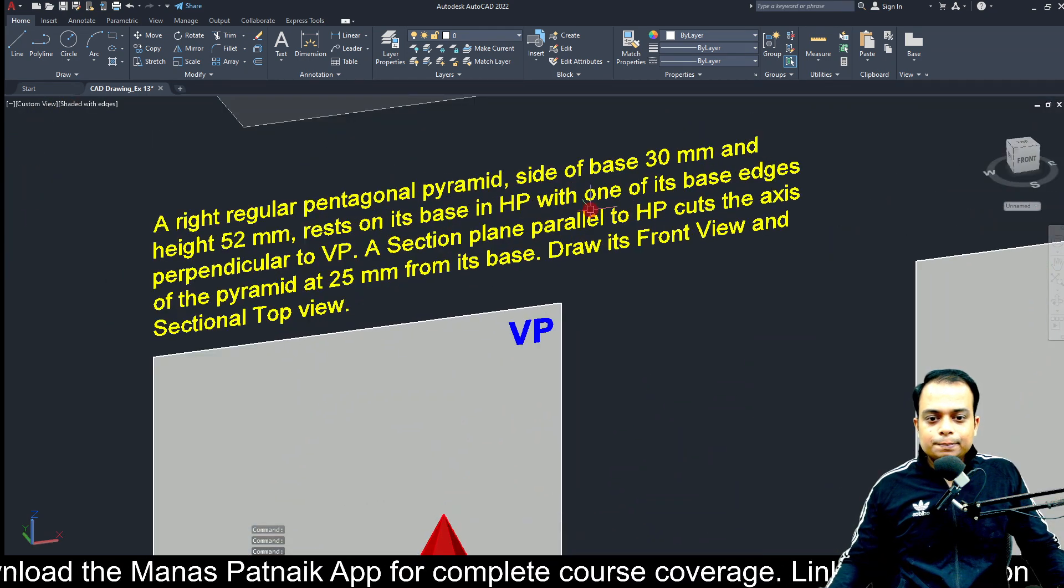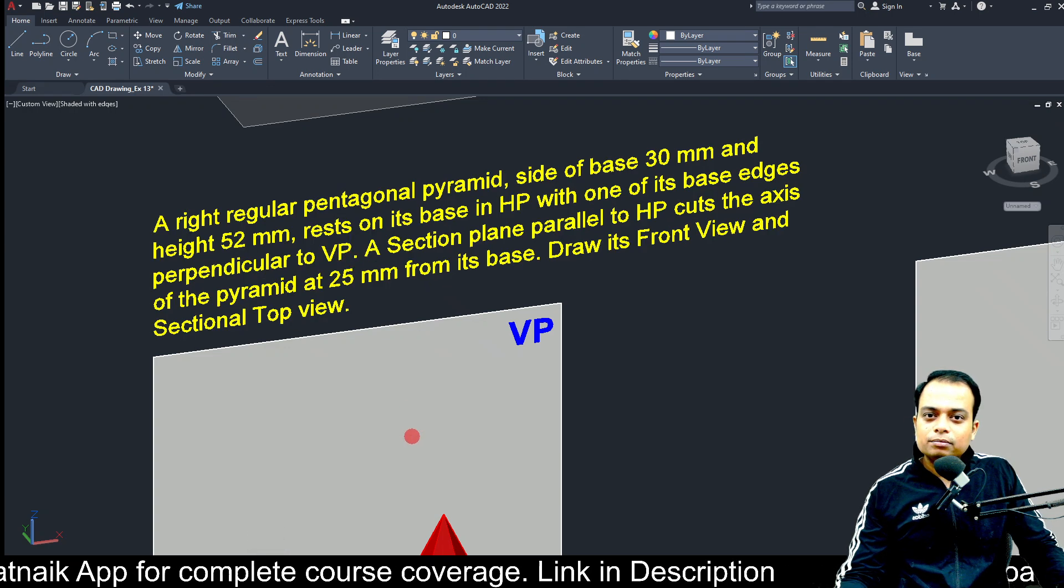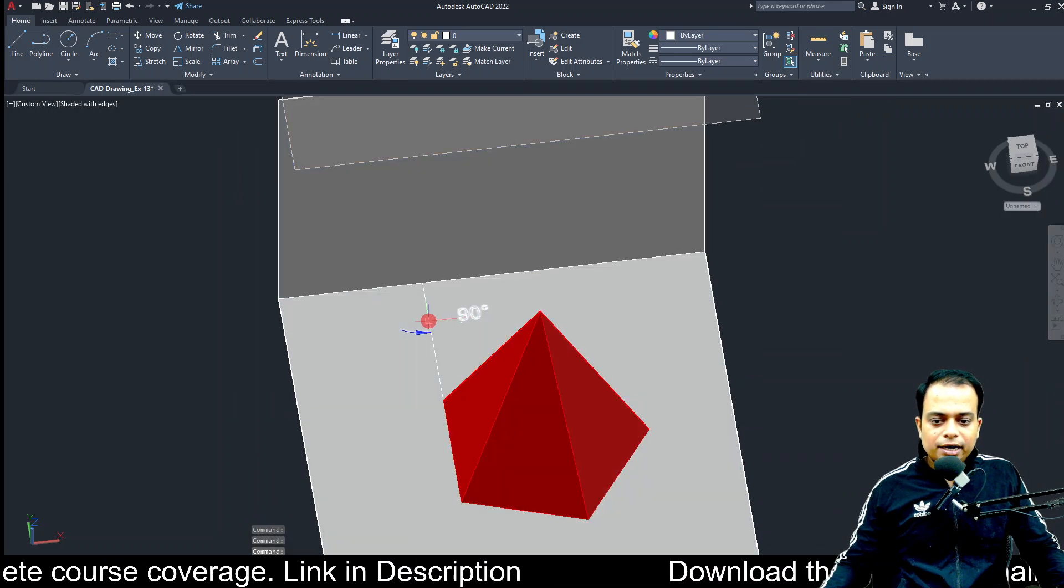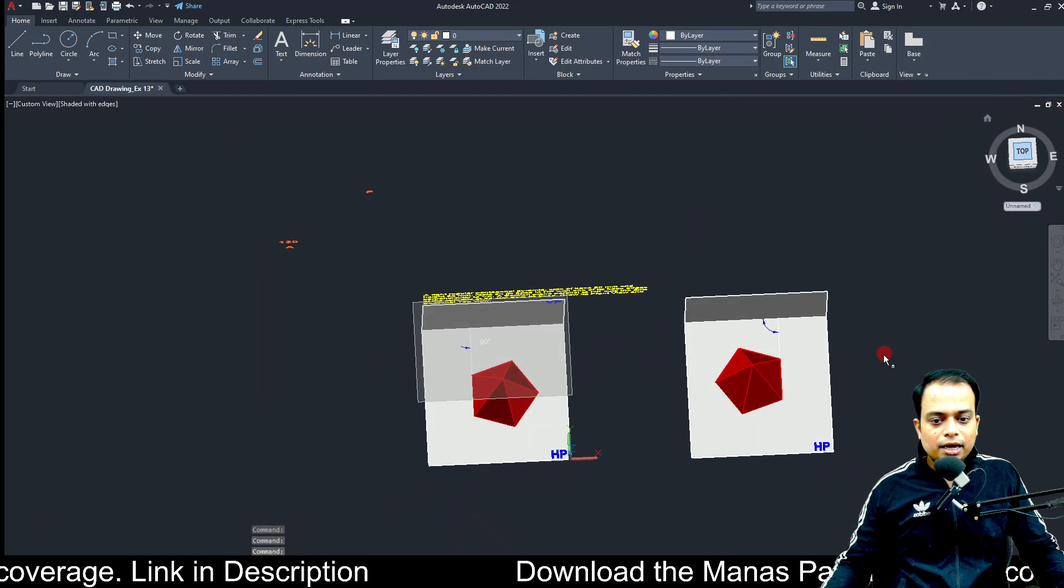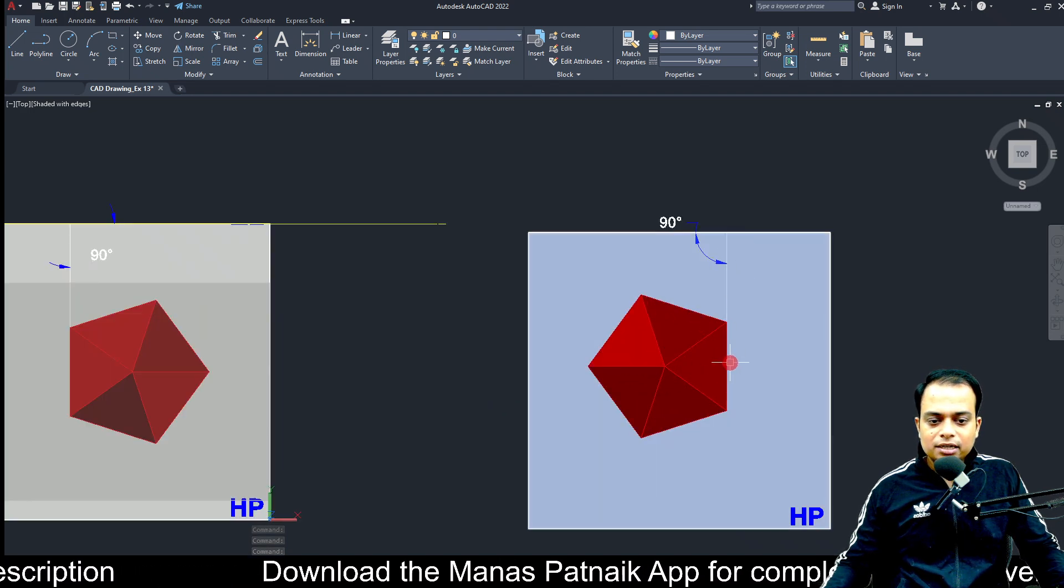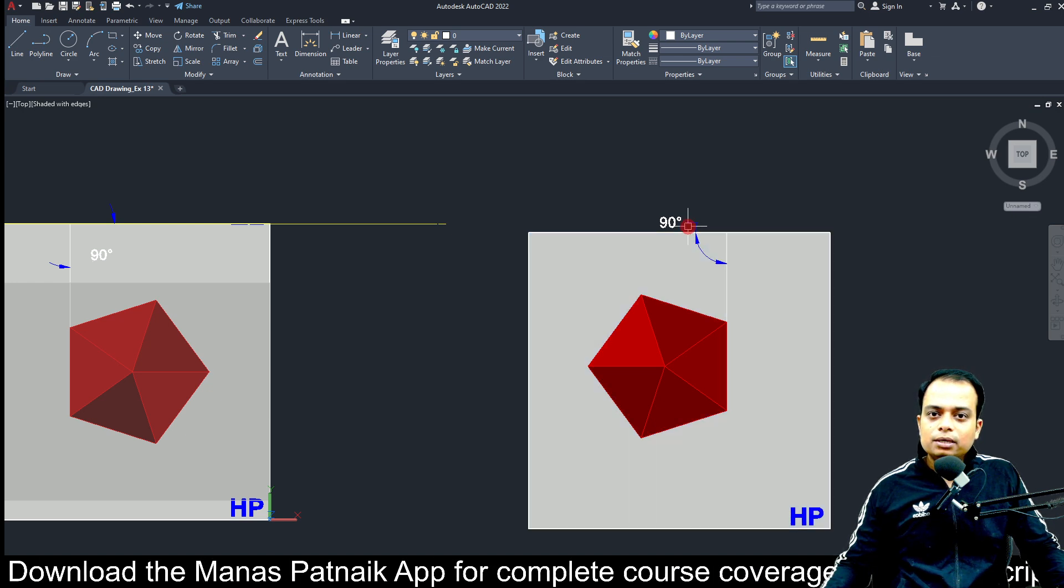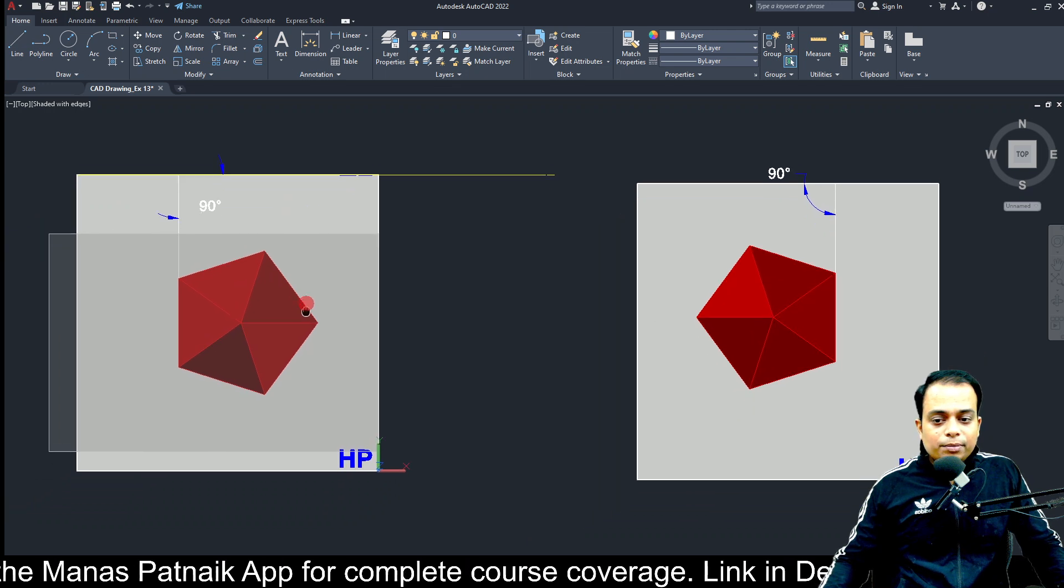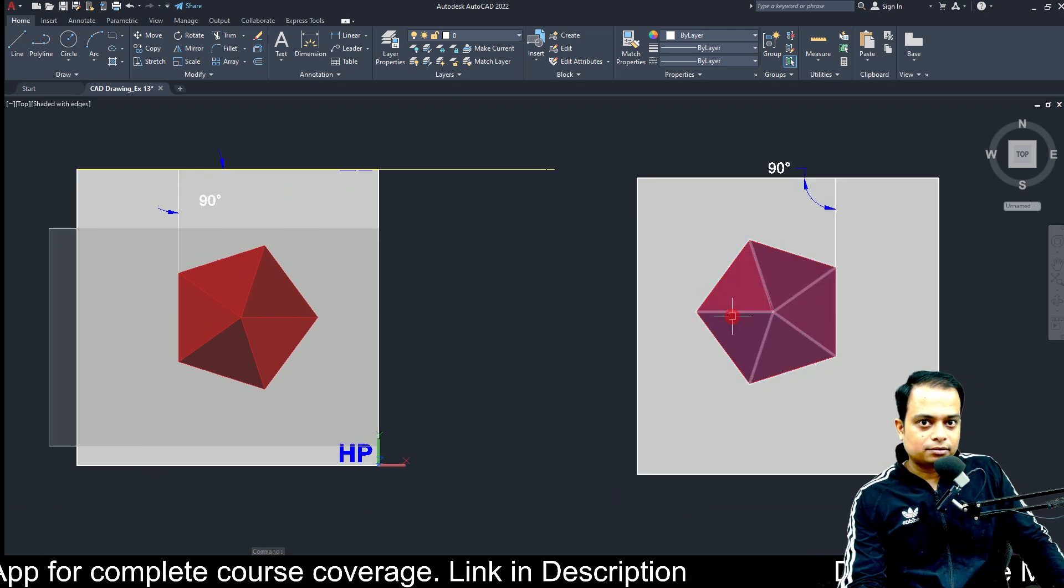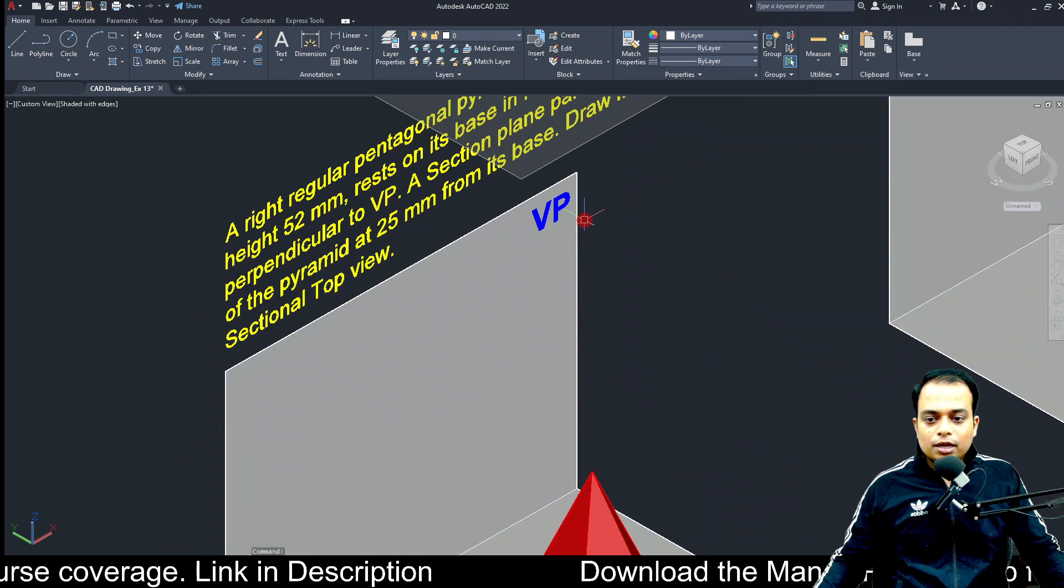If you read further, we find that one of the base edges is perpendicular to the VP. Have a careful look - this base edge is perpendicular to VP. This can be seen from the top. If you consider this arrangement of a pentagonal pyramid, you will see that this rightmost edge is perpendicular to the vertical plane. You can begin with any of the two options. I'm going to choose this one.